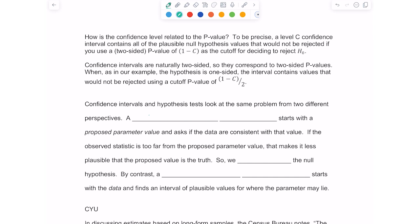How is the confidence level related to the P value? To be precise, a level C confidence interval contains all the plausible null hypothesis values that would not be rejected if you use a two-sided P value of 1 minus the confidence level. So if my confidence level was 95%, 1 minus 0.95 is 0.05, right? That's the cutoff for deciding to reject H0. So that's why our alpha level is 0.05 when we do a hypothesis test, but my confidence interval is 95% for the confidence level. Confidence intervals are naturally two-sided, so they correspond to two-sided P values. When, as in our example, the hypothesis is one-sided, the interval contains values that would not be rejected using a cutoff P value of 1 minus the confidence level divided by 2.